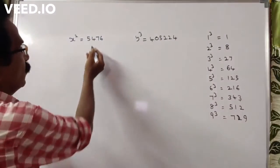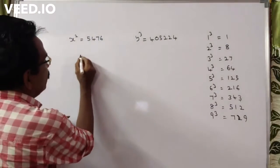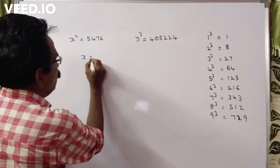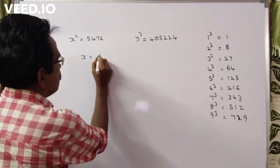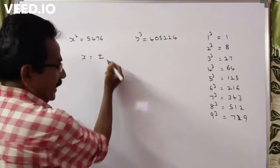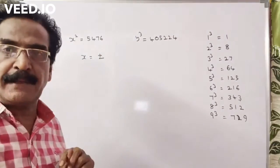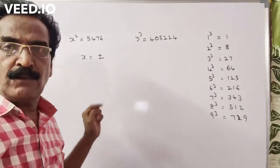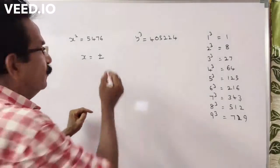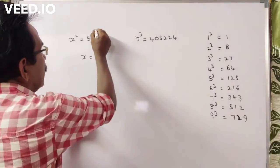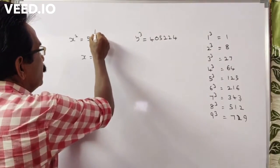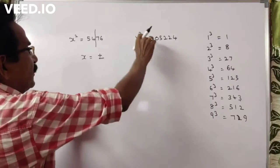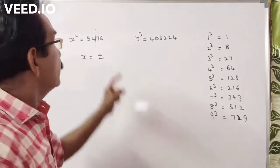x square is equal to 5476 means x is equal to plus or minus. To find the square root, draw a line two digits from the right end.